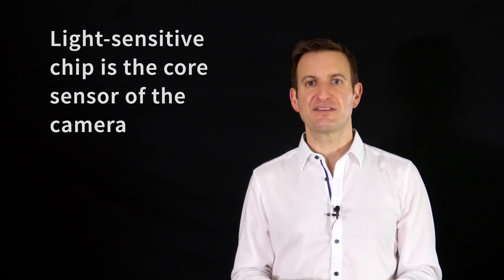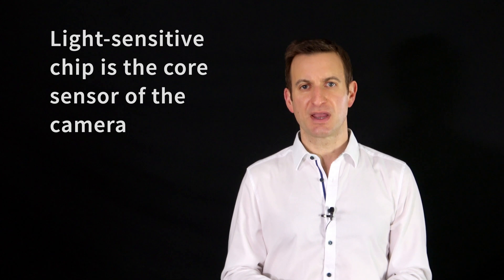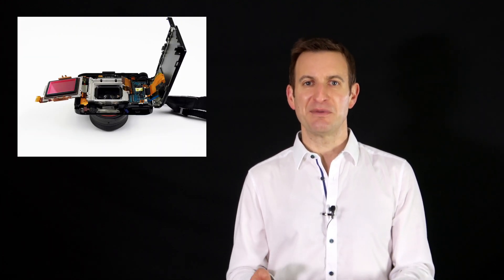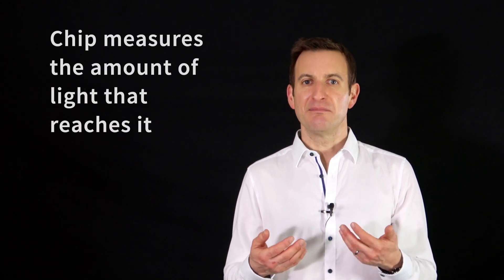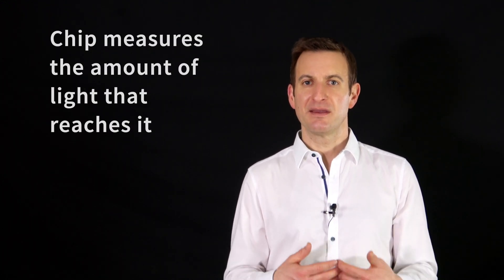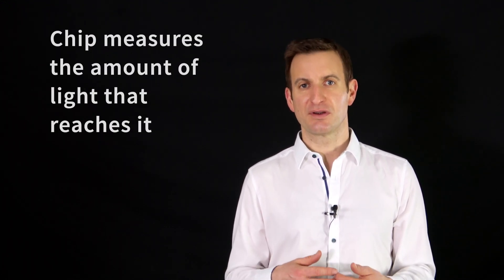The core of this sensor is a so-called light-sensitive chip which sits inside your camera. If you would dismount your camera at some point in time, you would actually find a small chip. What this chip does is basically measure the amount of light that reaches it within a certain time interval.